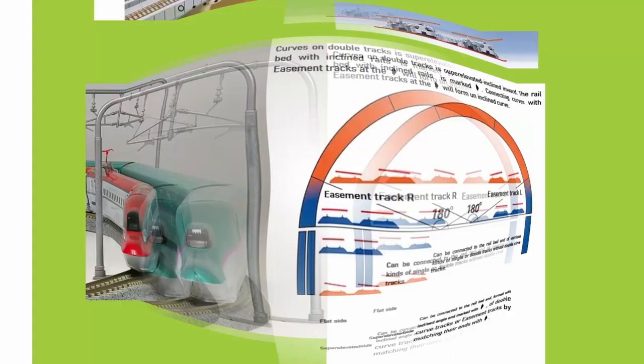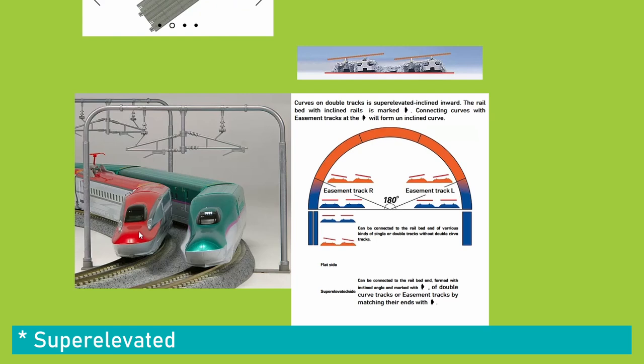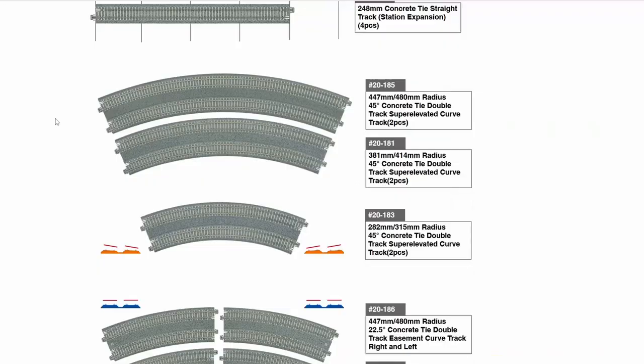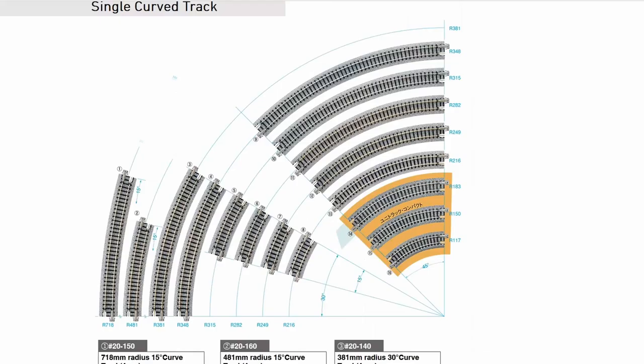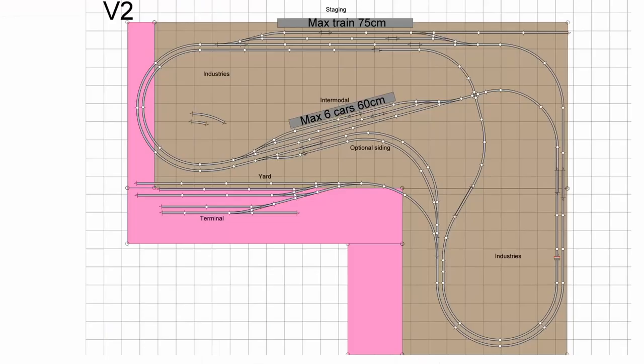One more piece of information before the design: the Kato Unitrack has elevated curve sections which are amazing, but they only come in double track sections. So if we look at the geometry, they only come in a few sizes of double track section. Ideally we want to use them, and they also have a little array of single track as well.